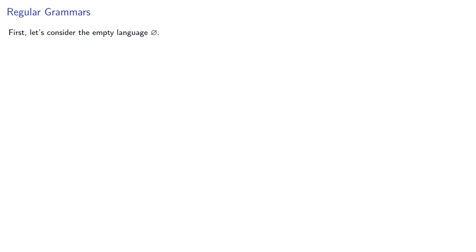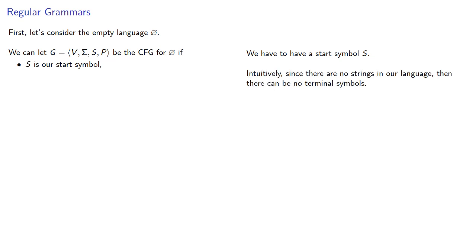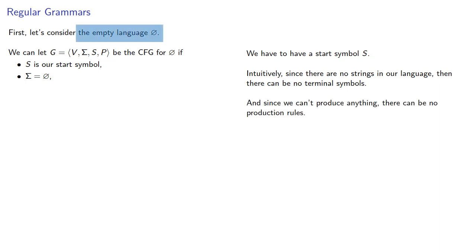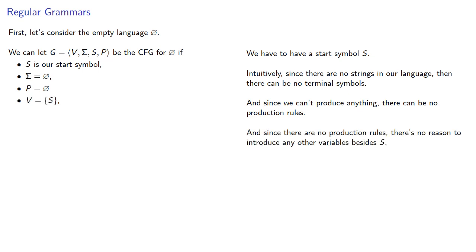First, let's consider the empty language. We can let G be the context-free grammar for that regular language. We have to have a start symbol — let's call that S. Now, intuitively, since there are no strings in our language, there can be no terminal symbols, so our set of terminal symbols is the empty set. And since we can't produce anything, there can be no production rules, so our set of production rules is the empty set. And since there are no production rules, there's no reason to introduce any other variables besides S, so the set of variables is just {S}.